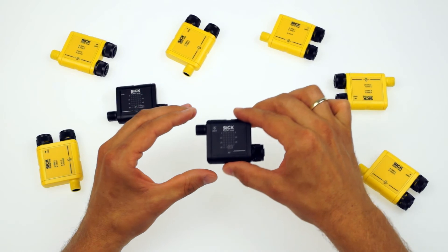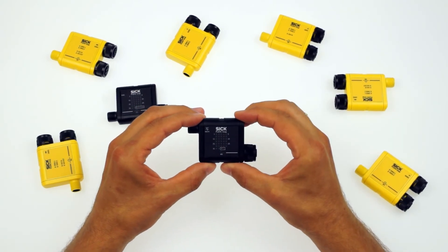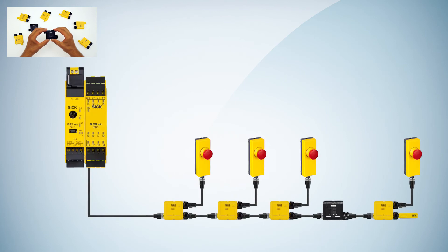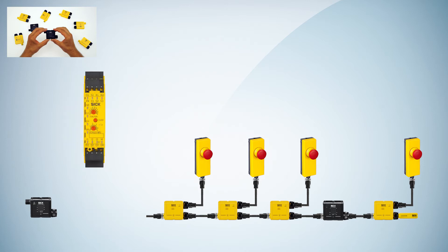Now let's talk about the master node. Up to now FlexiLoop has been working in combination with the software-programmable FlexiSoft safety controller. With the master node it is also possible to use FlexiLoop together with the FlexiClassic safety controller, which is configured by a rotary switch. Therefore the master node works as a kind of translator between FlexiLoop and FlexiClassic, and it always has to be the first node within a FlexiLoop cascade.